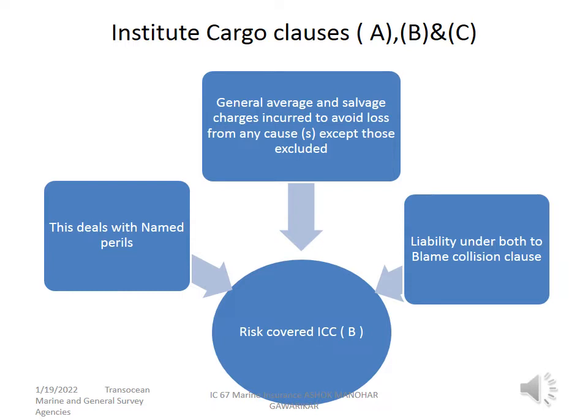Institute Cargo Clauses B is also a named peril policy. Generally whatever is covered under ICC C is also covered here. Additionally, water ingress because of sea, lake, etc. into the vessel's hold and certain additional listed perils are covered. Whenever somebody has issued a B policy, the perils listed have to be checked. The loss must be attributable to a peril covered under the policy for the claim to be recommended for the underwriter's consideration. All other things like general average charges are covered. Liability under the both-to-blame collision clause is covered.